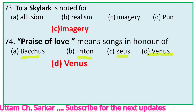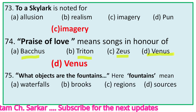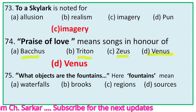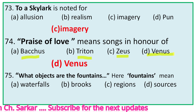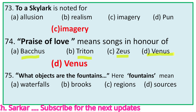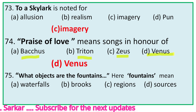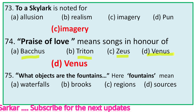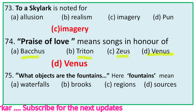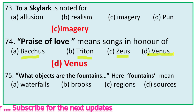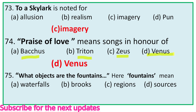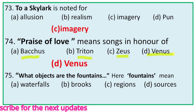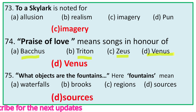Question 75: 'What objects are the fountains?' Here 'fountains' means — options: waterfalls, brooks, regions, sources. This line is from stanza 15: 'What objects are the fountains of the happy strain, what fields or waves or mountains?' Here 'fountains' means obviously sources. So the right option is D, sources.